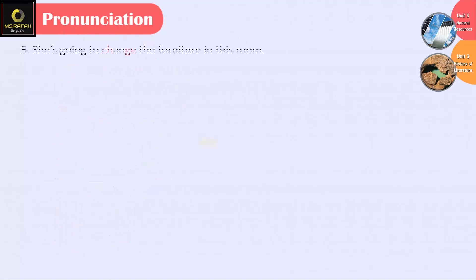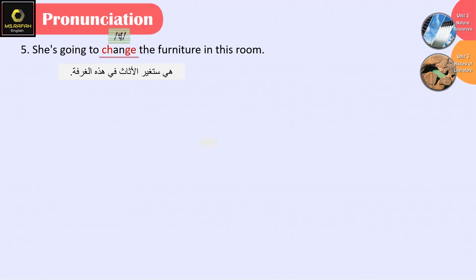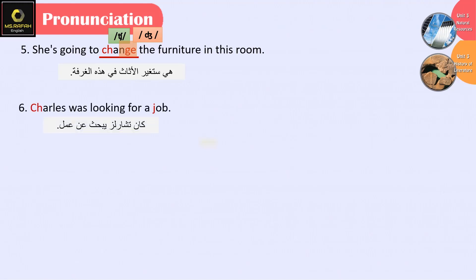Sentence 5: She's going to change the furniture in this room. Change — Ch. Sentence 6: Charles was looking for a job. Charles — Ch; job — J.